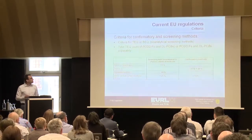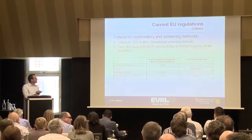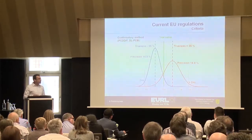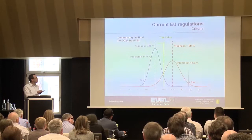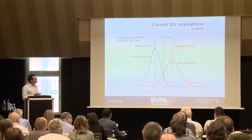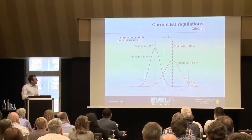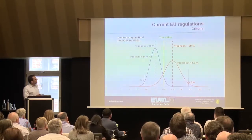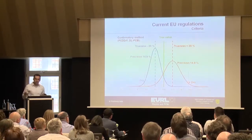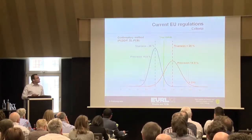Looking at the criteria: there are criteria for these confirmatory and screening methods — false compliance rate, trueness, repeatability, and so on. To give an idea what these criteria mean: if you have, for example, in confirmatory methods a true value of 100, the trueness has to be plus-minus 20% for an average value, and the precision shall be below 15%. So you could have two labs, one in the range of 50 and the other at 150, and both meet the criteria — both results are acceptable according to the EU criteria.